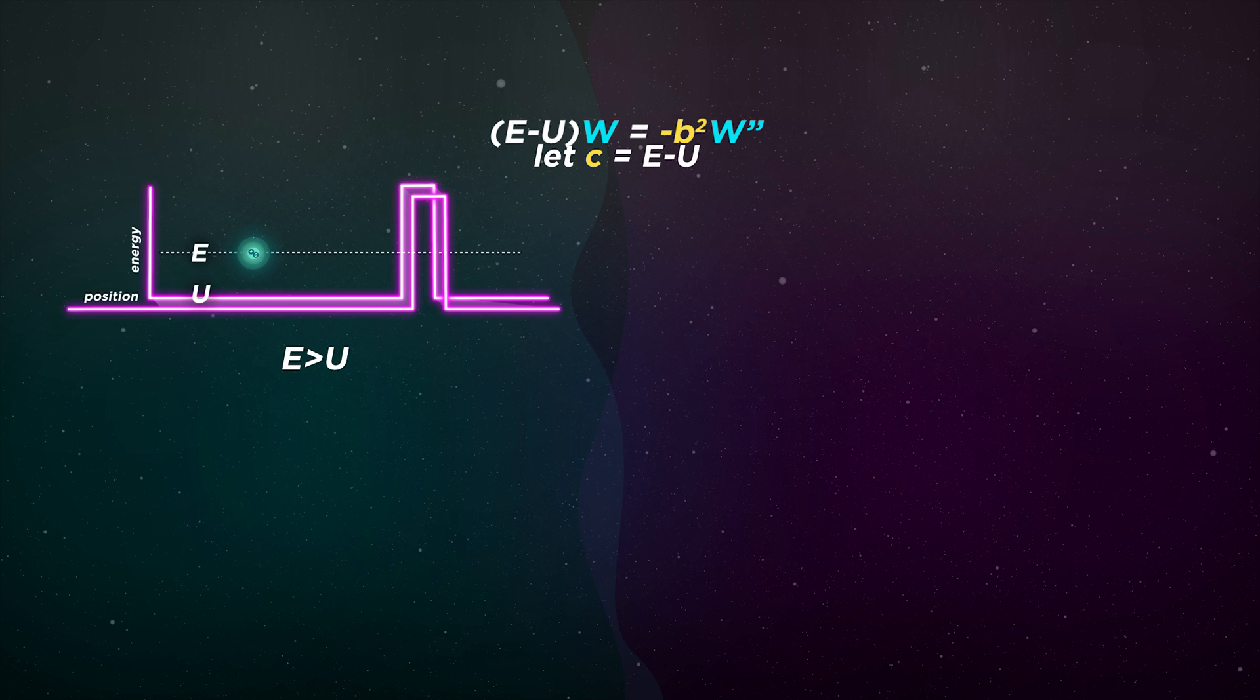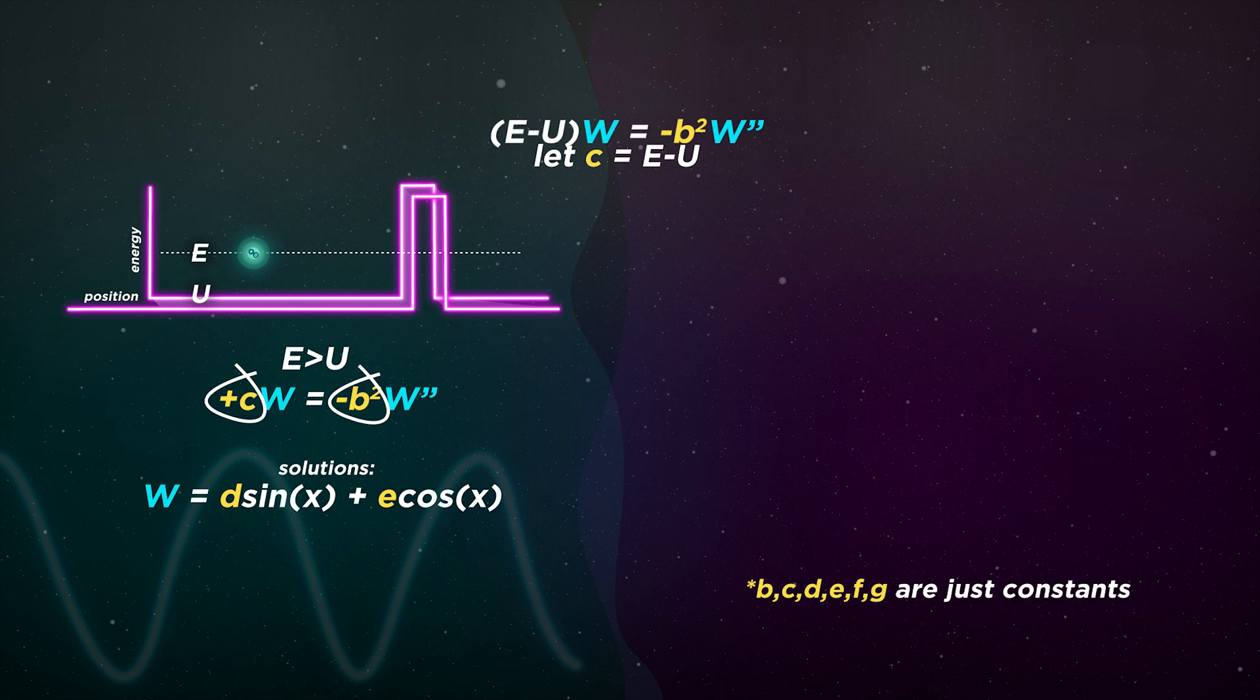In this region, the atom's energy, e, is greater than the energy needed to be around this area, u. e minus u is positive, and for a negative constant, we get a solution in the form of sine and cosine functions.